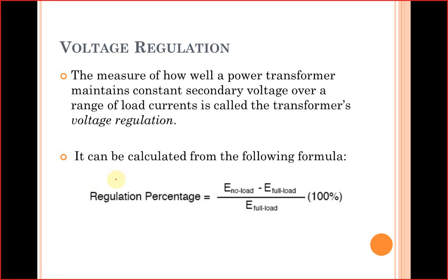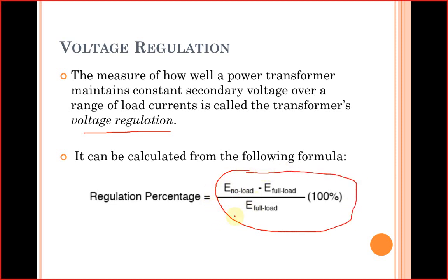We have already discussed voltage regulation in experiment number four. The measure of how well a power transformer maintains constant secondary voltage over a range of load currents is called the transformer's voltage regulation. In other words, the drop in terminal voltage when the transformer is gradually loaded is the percentage regulation. The formula is: voltage at no load minus voltage at full load, divided by voltage at full load, multiplied by 100.